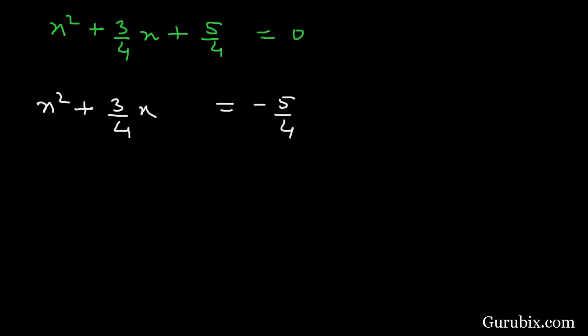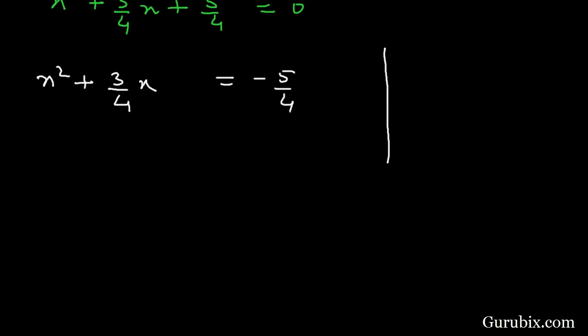Now we shall find the half of the coefficient of x and that is 3 over 4. So half of 3 over 4 is 3 over 8 and now we shall add the square of this 3 over 8 in both the sides.